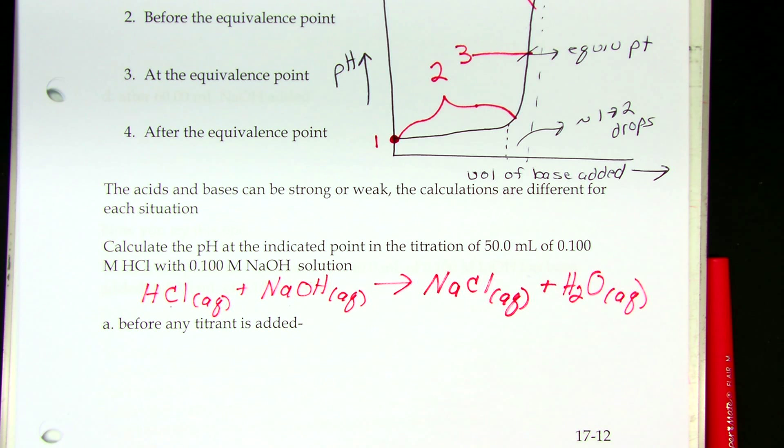So anytime you have a strong acid and a strong base and you're at the equivalence point, the pH is seven. If you can recognize that, if someone were to ask you this in the near future, what's the pH at this equivalence point? If you recognize strong acid, strong base, I'm at the equivalence point, you don't need to get your calculator out.